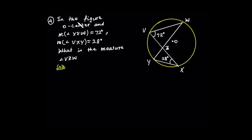Okay. In the figure, O is the center. YW is not a diameter. Given information: the measure of angle XVW — that angle — is some value in degrees. And the measure of angle VXY is 28 degrees. We are asked to find angle VZW.